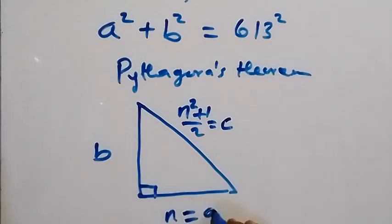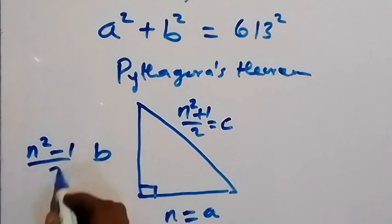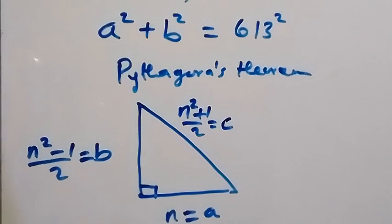This n equals a in terms of n. And in terms of n, this side which is b can be written as n squared minus 1 over 2, which equals b.